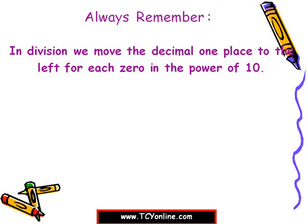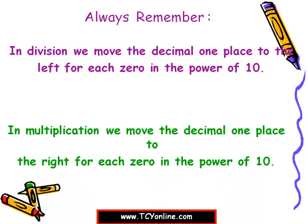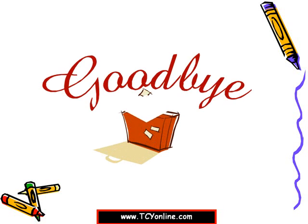Always remember: while dividing, we move the decimal one place to the left for each zero in the power of 10, and while multiplying, we move the decimal one place to the right for each zero in the power of 10. With this, we come to the end of this topic. Goodbye and see you in the next session.